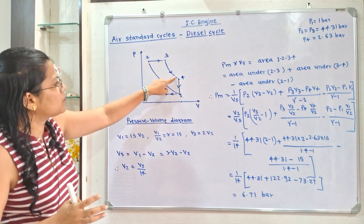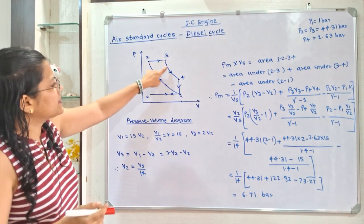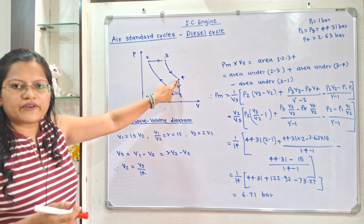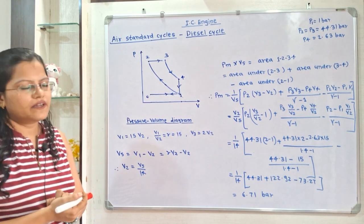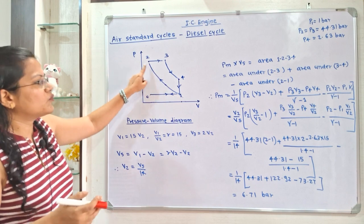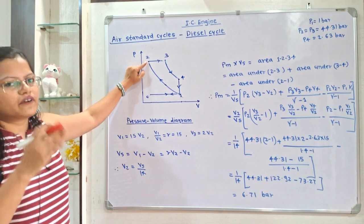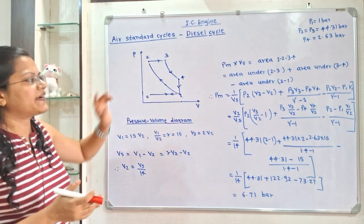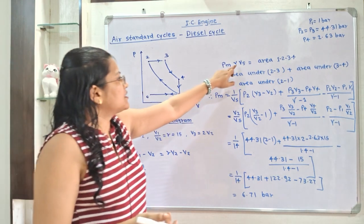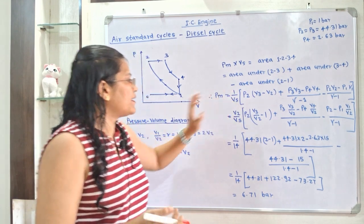Area under process 3 to 4 is a curve, so it equals (P3·V3 − P4·V4) / (γ − 1). Area under process 2 to 1 equals (P2·V2 − P1·V1) / (γ − 1). Transferring Vs to the right-hand side, we place 1/Vs outside the square bracket.